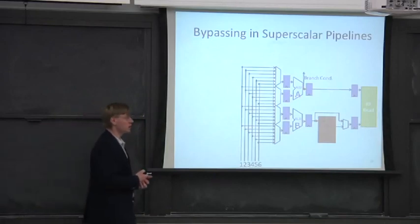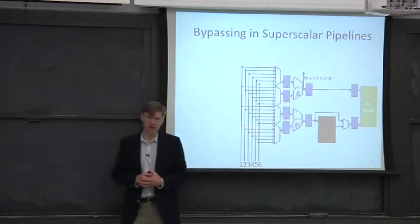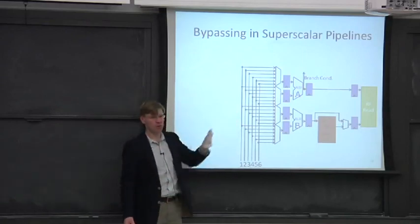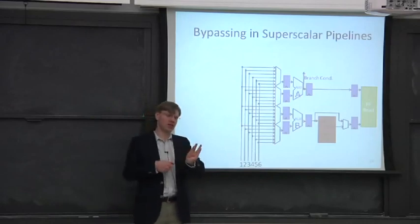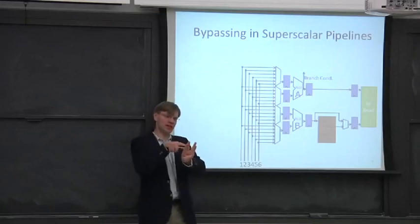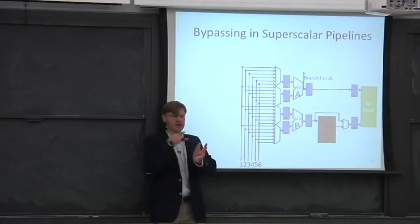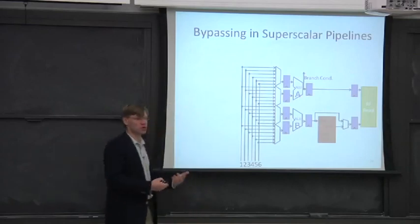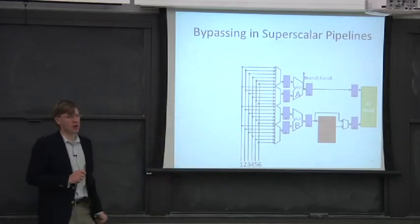Other approaches that people take to this is sometimes they will actually have what are called clustered superscalars. So clustered superscalars, they'll actually have, let's say, four pipelines. And they'll cluster them into two pipelines of two each. And you'll allow bypassing between two of the pipes and two of the other pipes. And if you do bypass between the two sets of clustered pipes, then it takes an extra cycle, or you have to do it through the register file or something like that. So there's other approaches there to try to mitigate the blowup of this bypassing network.